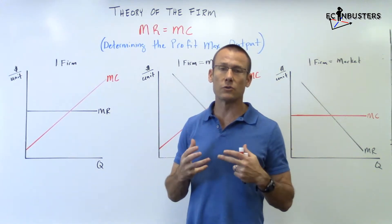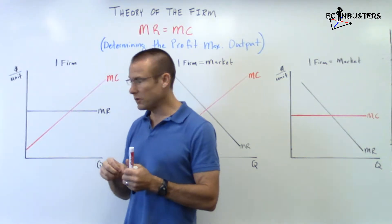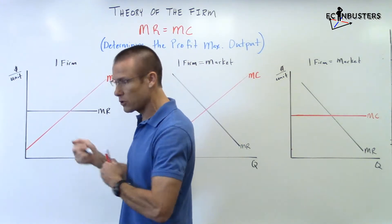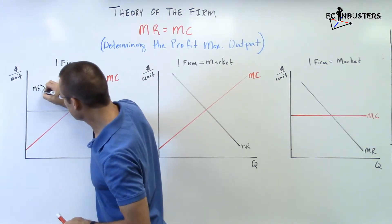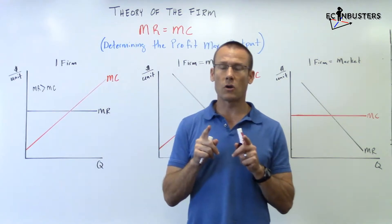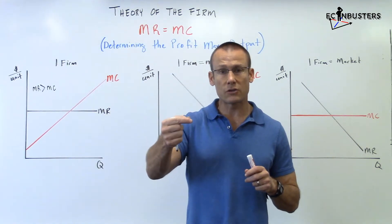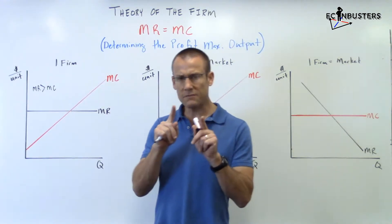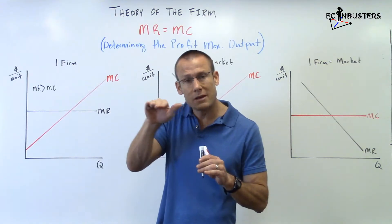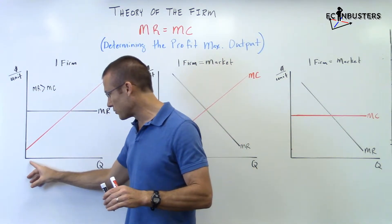Define the level of output — the profit maximizing level of output. Should we produce these first goods? The answer is absolutely, but why? Because we're going to produce as long as MR exceeds MC. Marginal revenue is the additional revenue the firm gets for producing one more good; marginal cost is the additional cost to make one more good. We will make additional goods as long as the revenue for each additional good is more than the cost. Marginal revenue to the firm is the firm's marginal benefit, and if your marginal benefit exceeds your marginal cost, do that thing — produce that good.